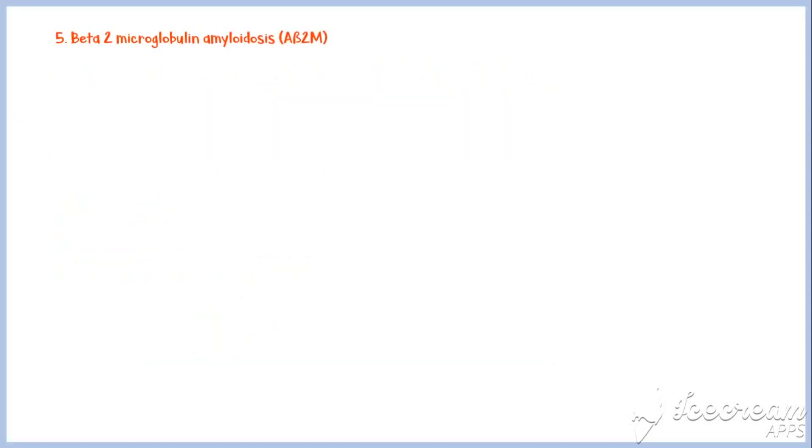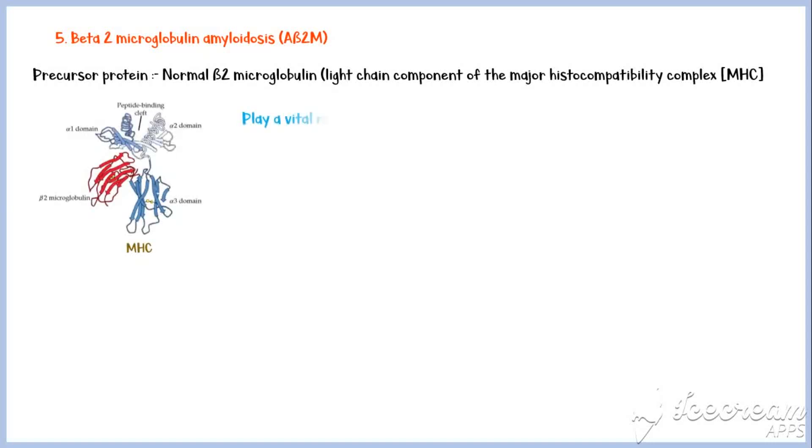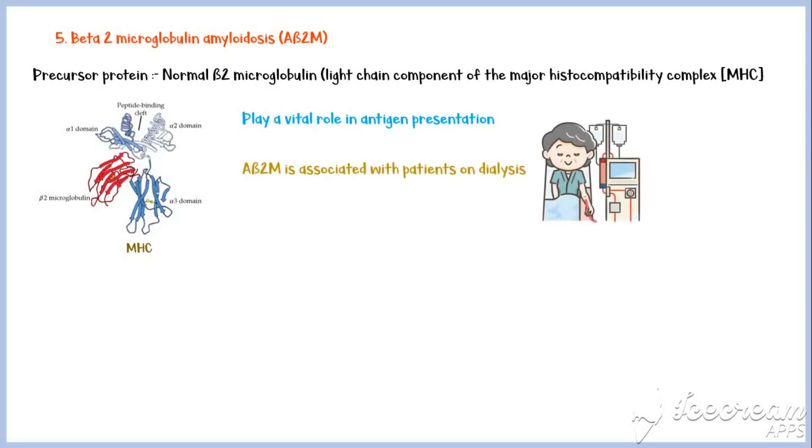Beta-2-microglobulin amyloidosis is also another important type of systemic amyloidosis. The precursor protein is a normal sequence beta-2-microglobulin, which is the light chain component of the major histocompatibility complex, which plays a vital role in antigen presentation. Beta-2-microglobulin amyloidosis is associated with patients on dialysis, and rarely, it can be seen in patients with renal failure who are not on dialysis.